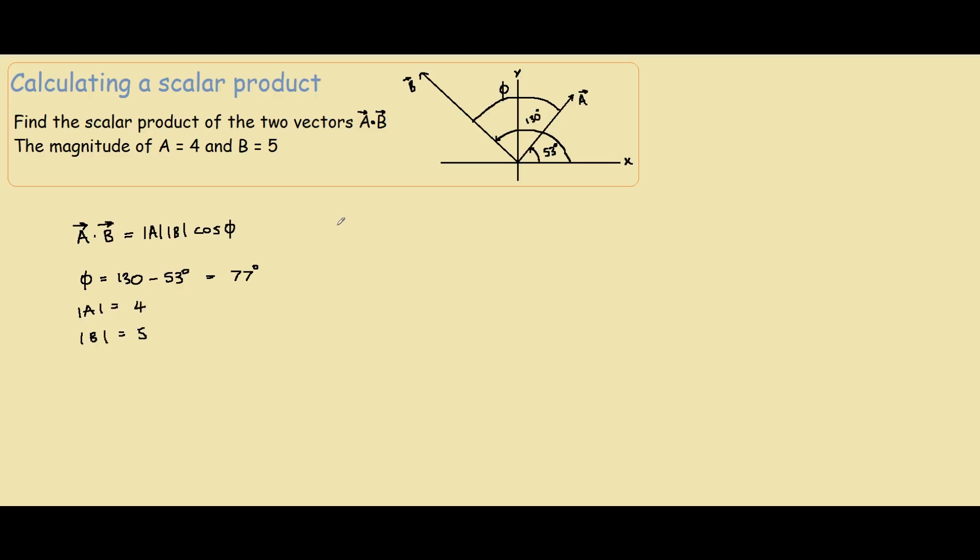We have everything to solve the scalar product, so A dot B equals 4 times 5 times cos 77 degrees. This comes up to be 4.5. This was our first method.